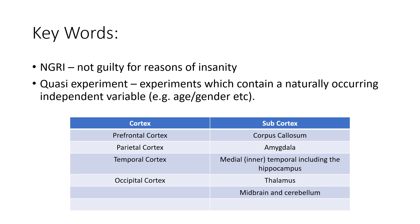This study was essentially a quasi-experiment, which is an experiment where the independent variable is naturally occurring — such as age and gender. In this study, the IV is basically whether they were a murderer or not, or whether they pled NGRI or were a normal participant. Because this study measures parts of the brain, you're going to need to know the different parts, which are split into two categories: the cortex and the subcortex.